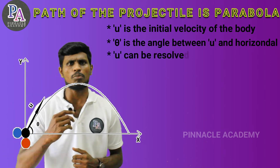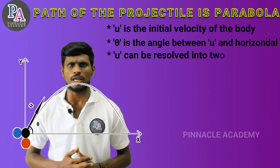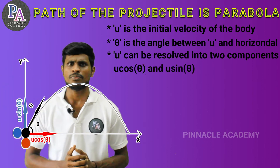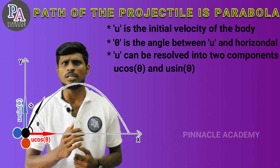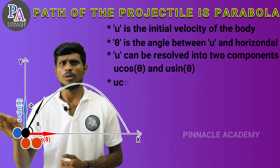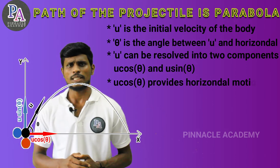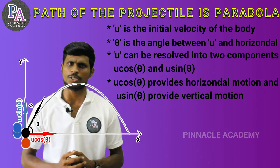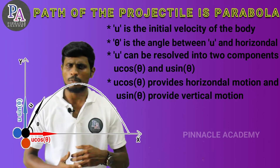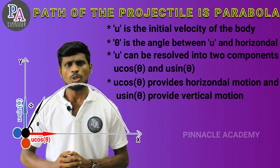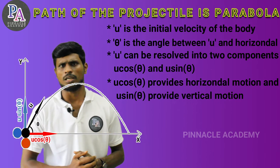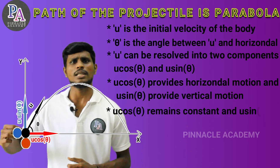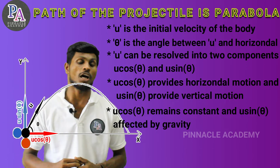We are talking about two components and split. We are talking about u cos theta and u sin theta. This u cos theta is a horizontal motion. This u sin theta is a vertical motion. U cos theta remains consistent, and we see that gravity is affected.